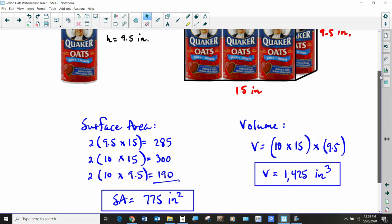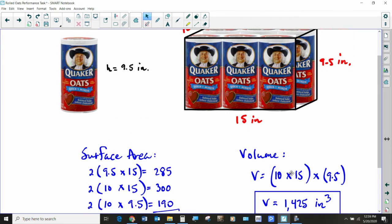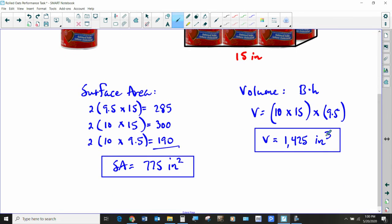When you multiply all three of those dimensions together, remember the base area. This is the basic formula. Take the base area, multiply it times the height. Well, the base area would be your 10 by 15 side, and then multiply that times the height. You get 1,425 cubic inches. Okay? So keep that in mind. Our job is not to find the one with the least volume, the one with the least surface area.